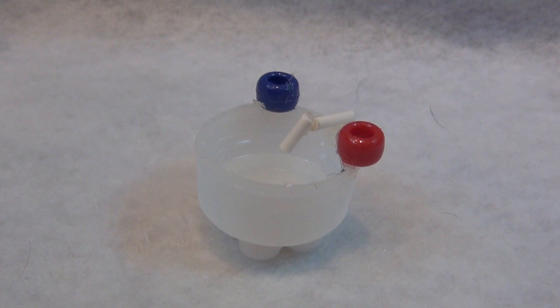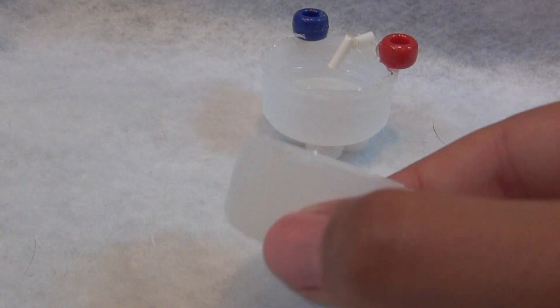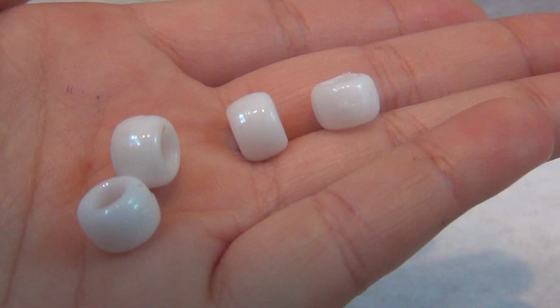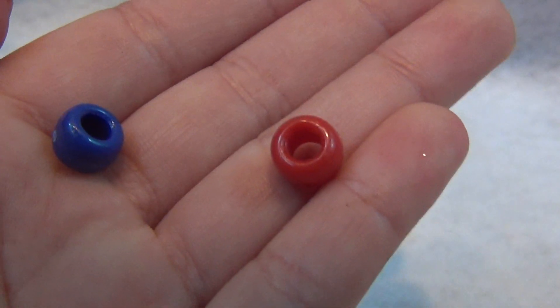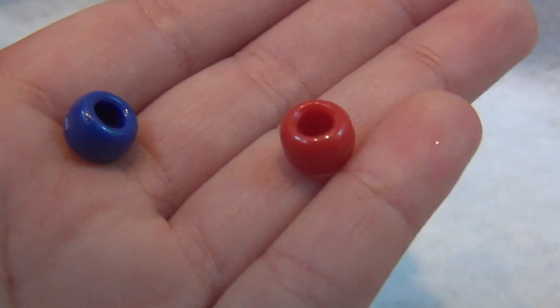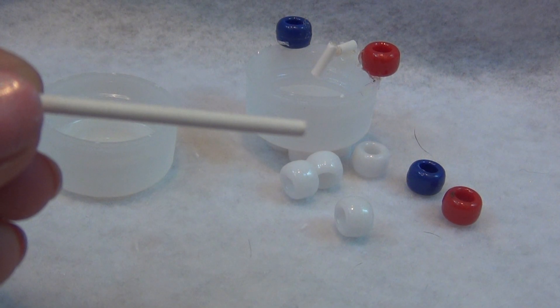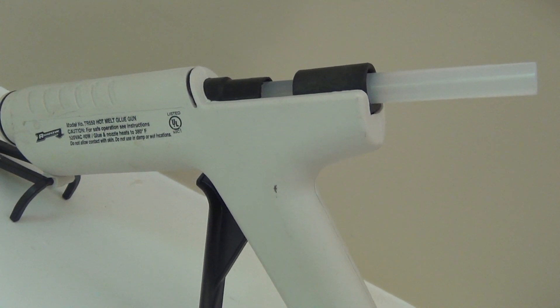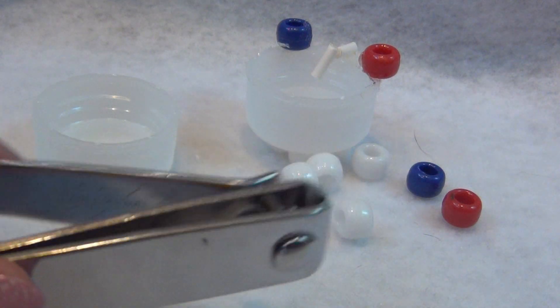you will need a bottle cap, preferably white or blue, four white beads, a red and blue bead, one of each. A cotton swab with the ends cut off. A hot glue gun. And some nail clippers.